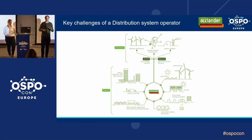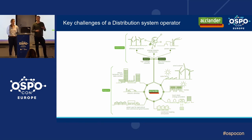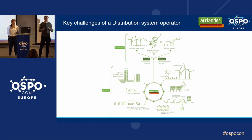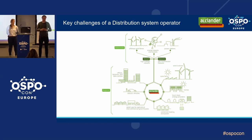What are the challenges a distribution system operator like Alliander is facing today? In 10 years time the way we live, work and travel won't be the same. Fossil fuels are becoming more scarce and have a growing impact on our environment, and worldwide new initiatives are emerging to conserve energy and make it more sustainable. This changes the way we generate, use and distribute energy, creating major challenges for companies like Alliander.